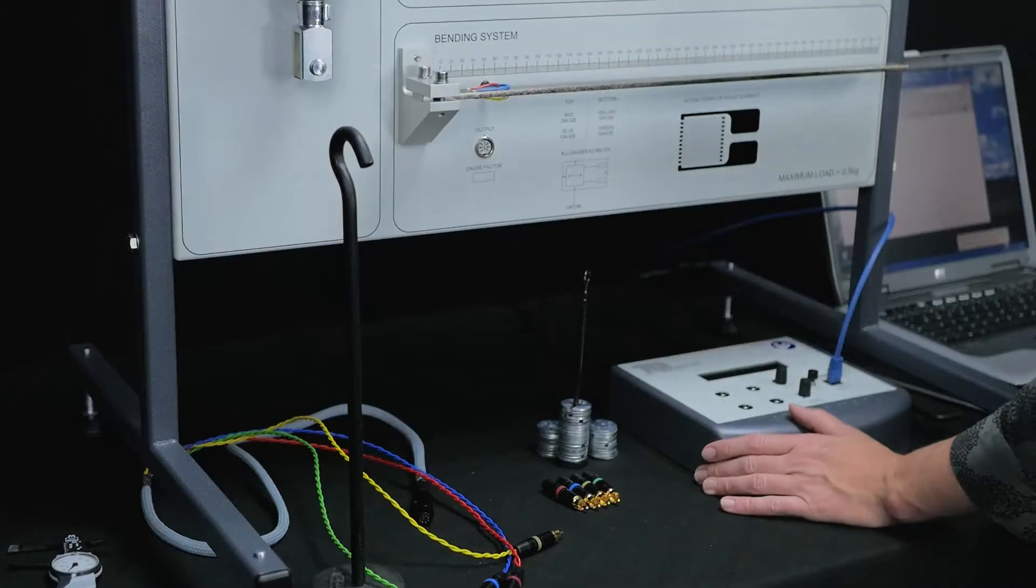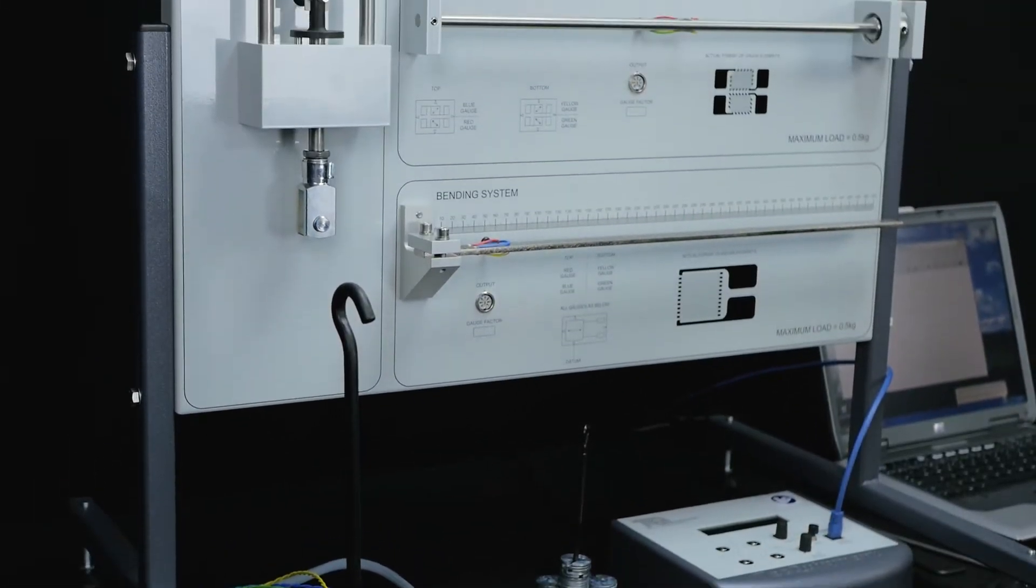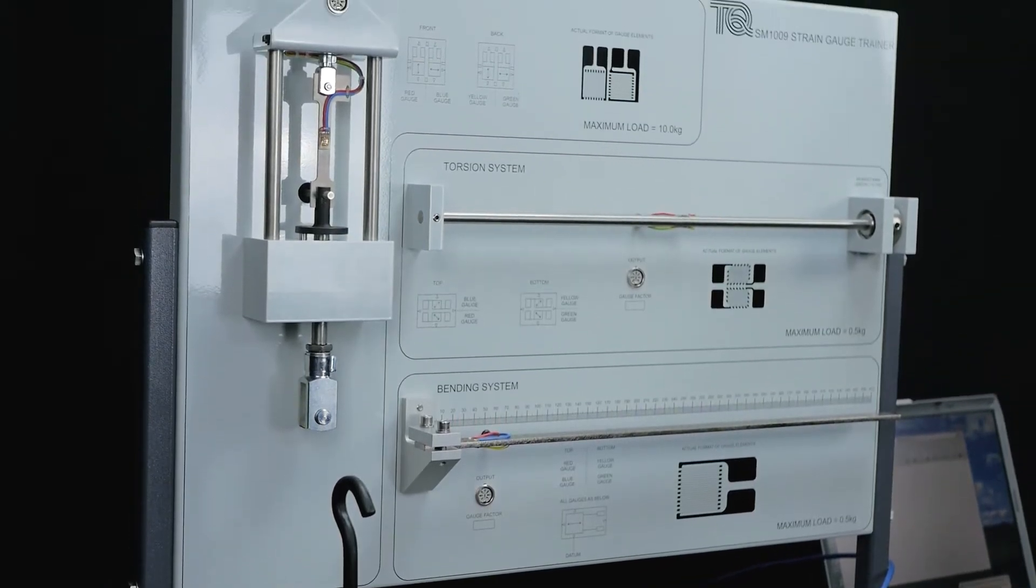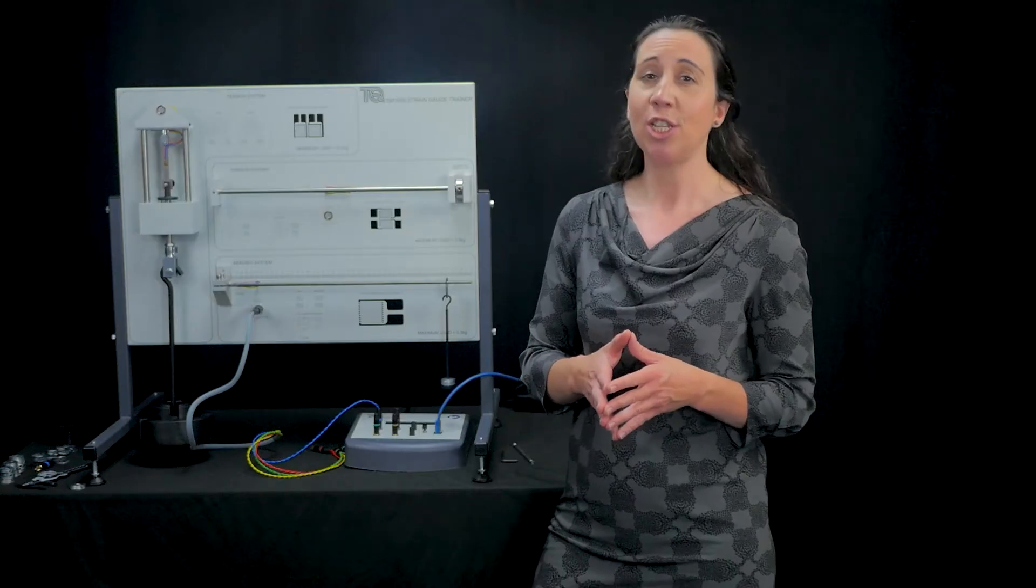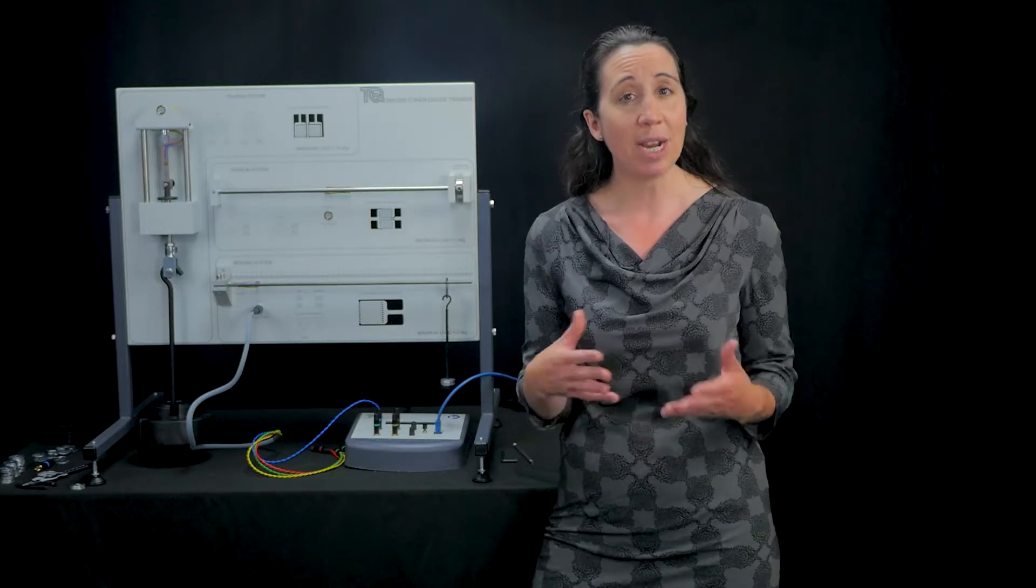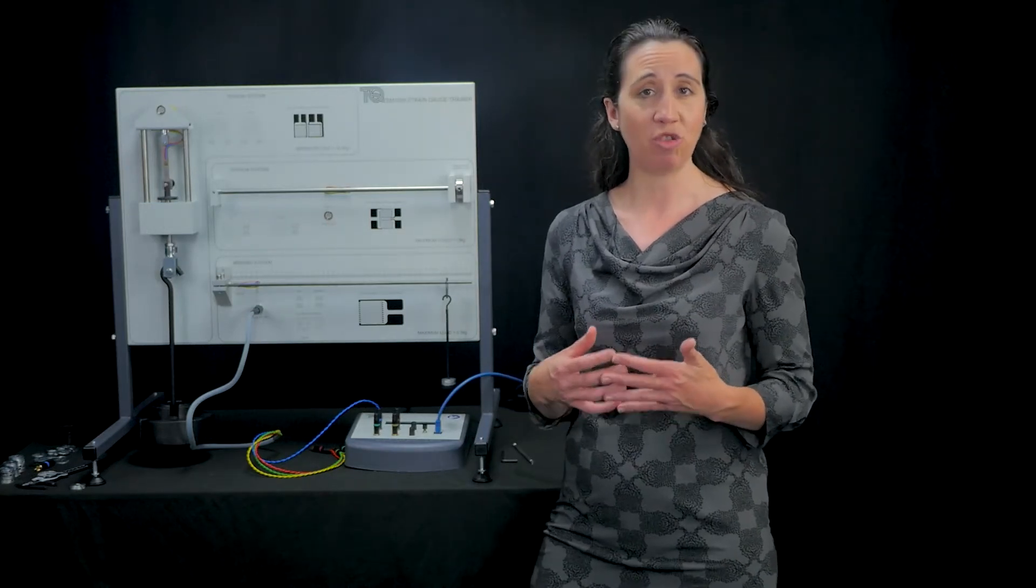By allowing students to experiment with three different structures to test tension, torsion and bending using resistant strain gauges, students can practically learn real-world methods of measuring strains in different structures.